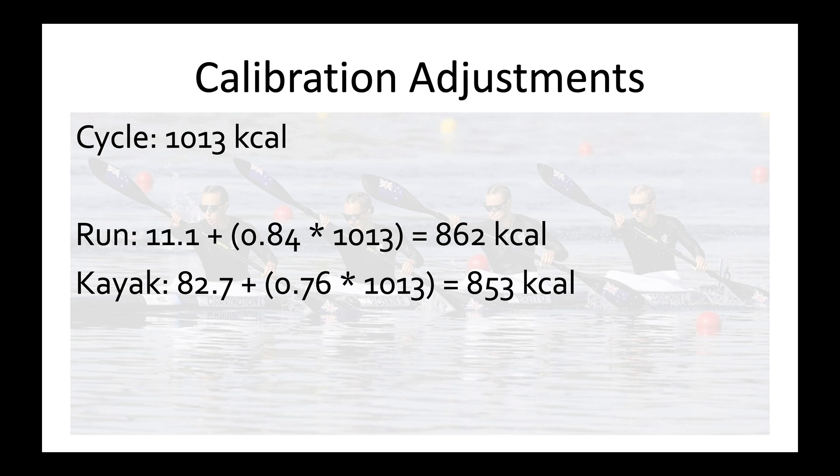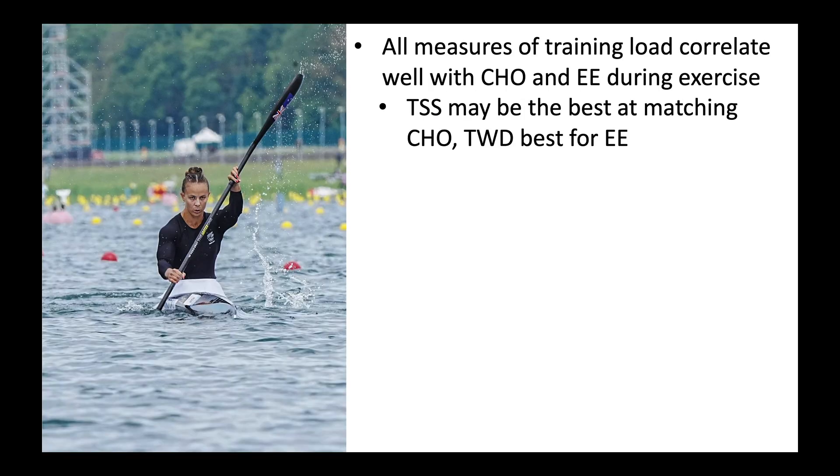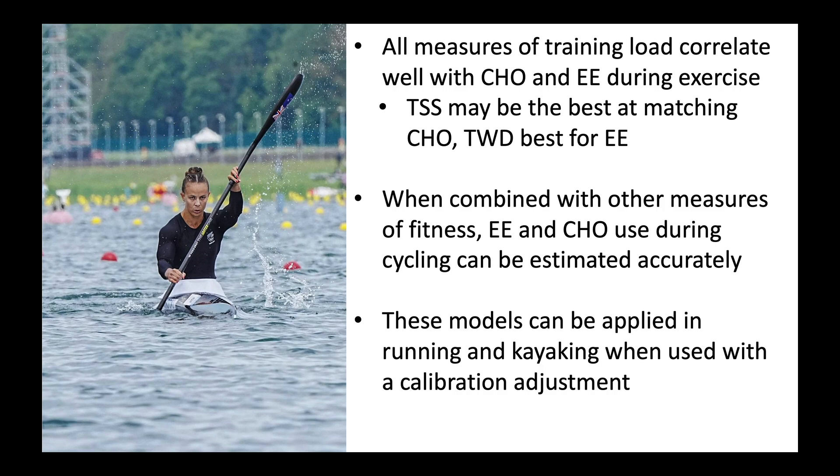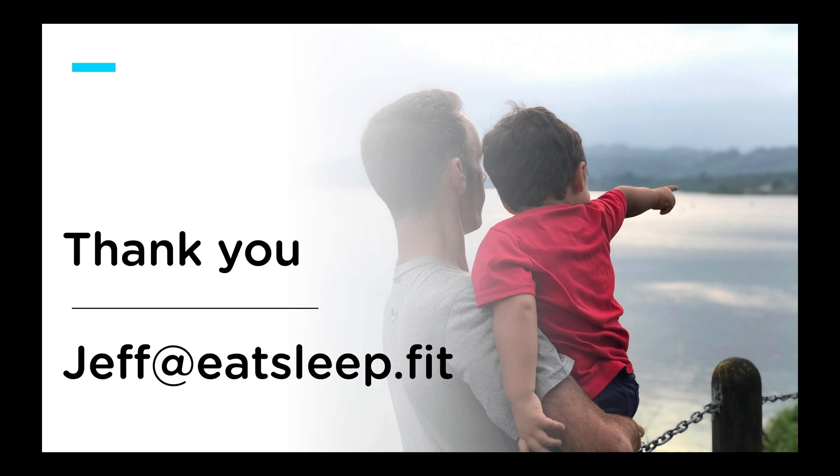So I know that was a lot, so we'll wrap things up here. To summarize some of the key points, all measures of training load correlate well with carbohydrate and energy expenditure during exercise. So TSS may be the best at matching carbohydrate, total work done is the best for energy expenditure, but any one can really be used effectively. When combined with other measures of fitness, energy expenditure and carb use during exercise can be estimated accurately. And these models can be applied in running and kayaking when used with a calibration adjustment. So thank you again for your time, feel free to reach out with any questions, and I'd love to know what you think and or if you're applying this.